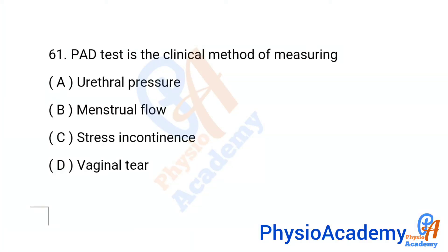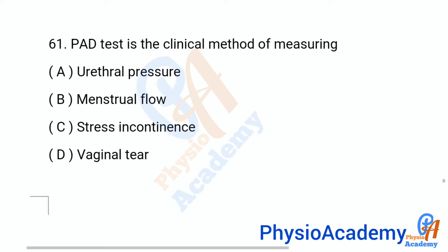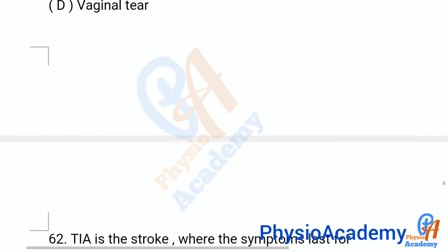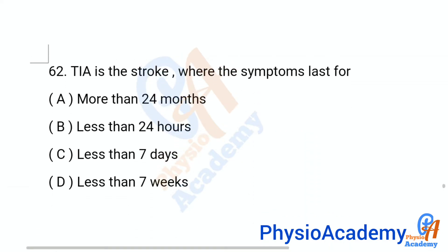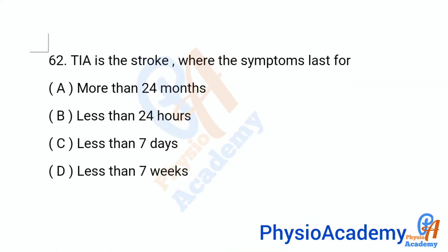Question number 61: PAB test is the clinical method of measuring — option A urethral pressure, option B menstrual flow, option C stress incontinence, option D vaginal tear. The correct answer is option C: stress incontinence.